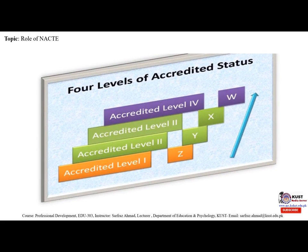There are four levels of accreditation status. When a program is given accreditation, it is placed in a certain category: Accredited Level 1, which is the Z category; Accredited Level 2, which is Y; Accredited Level 3, which is X; and Accredited Level 4, which has the status of W.